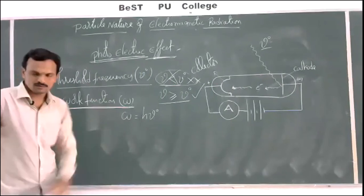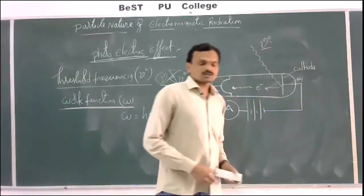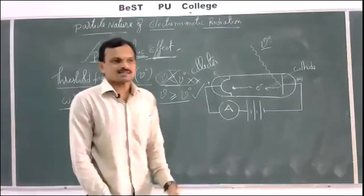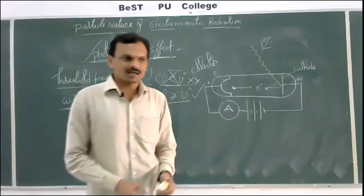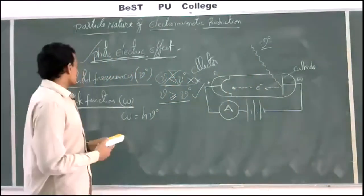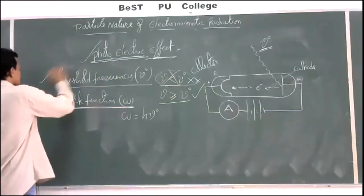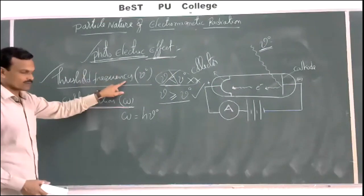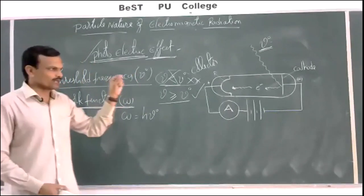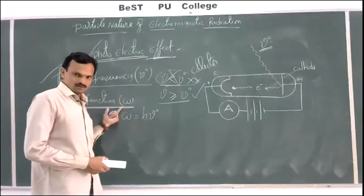To summarize: the photoelectric effect is the ejection of electrons from the surface of a metal when radiated with light of a certain minimum frequency. The minimum frequency required is called the threshold frequency. The energy corresponding to the threshold frequency — the minimum energy required for ejection of electrons — is known as the work function. More concepts on this topic will be discussed tomorrow.